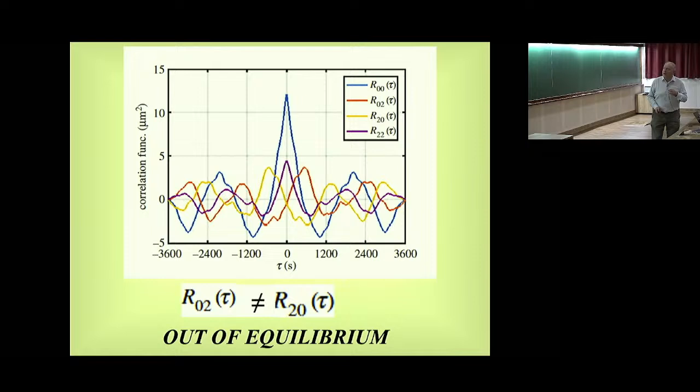But, and of course, if it's a thermal system, you have T minus T symmetry, so it means that then the cross correlation two zero is equal to the cross correlation zero two. But if the system is not in equilibrium, if the noise is not in equilibrium, then these two guys should be different. And so that's a test, a simple test of whether or not this fluctuation is in equilibrium or not.